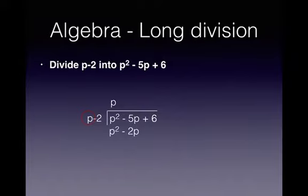The next step, change the sign on the bottom line and add. So we add or subtract vertically. So p squared minus p squared is 0 and minus 5p plus 2p is minus 3p. Bring down the plus 6.